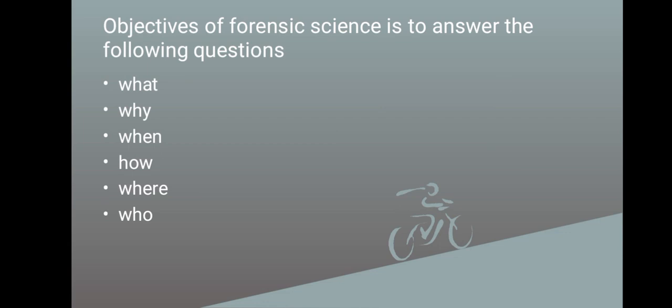We have why, which looks into the reason. We have when, which covers time. We have how, which looks into the manner. We have where, which looks into the place or location. We have who, which looks at who was the victim, who are the witnesses, who are the perpetrators. Those are the six questions that forensic science seeks to answer: what, why, when, how, where, and who. They are commonly referred to as the six W's of forensic science.